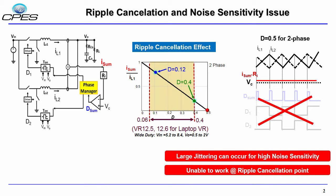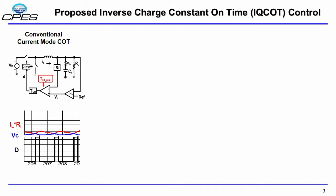Now when the phase number increases in multiphase operation, that actually creates more ripple cancellation points and makes the control more difficult. So to solve this issue, here we proposed the inverse charge control constant on time.